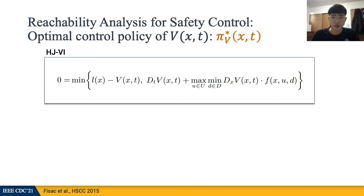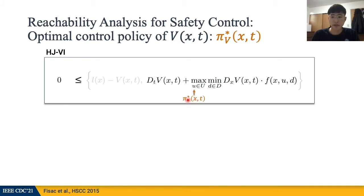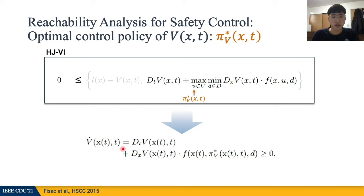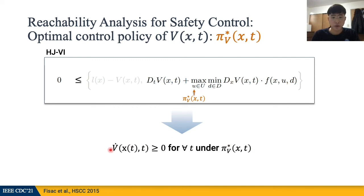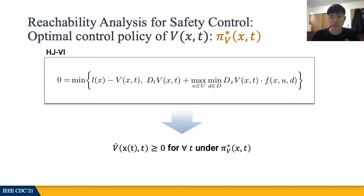Solving for the BRT value function involves solving a specific partial differential equation called the Hamilton-Jacobi variational inequality, which is presented here. This is derived from the dynamic programming principle of the value function. Since we take the minimum of the two terms on the right, the second term is always greater than or equal to zero. Under the optimal policy of the value function, denoted as pi_V*, according to the chain rule, this is the derivative of the value function along the optimal trajectory. Therefore, we can derive that under the optimal control, V is always non-decreasing.